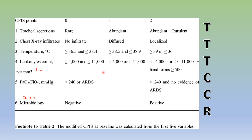A way to remember the six CPIS variables is that there are 3 T's: tracheal secretions, temperature, and total leukocyte count. There are 2 C's: chest X-ray and culture. And 1 R: ratio of PaO2 by FiO2. So remember: 3T, 2C, and 1R — that is 3, 2, 1.